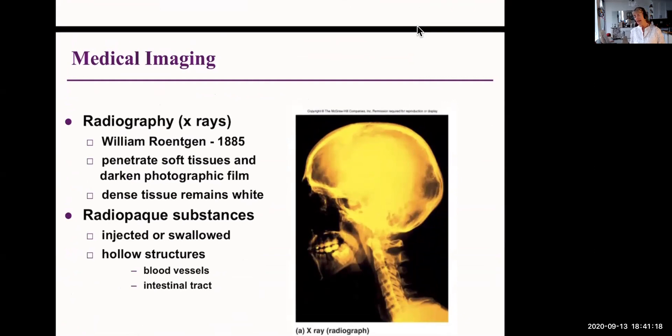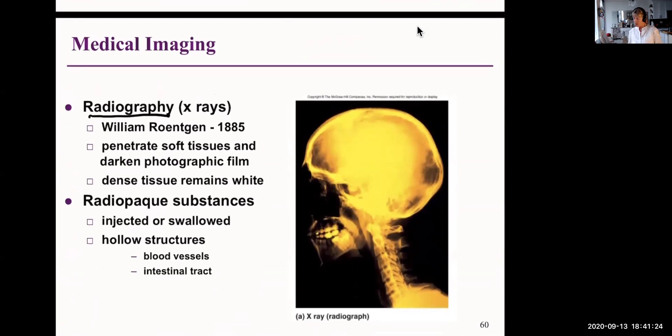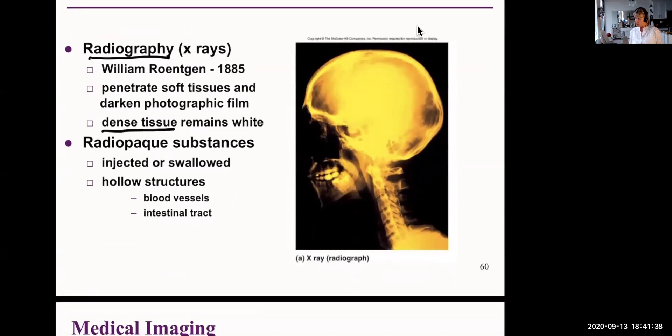So some imaging techniques are, for example, radiography or x-rays. They penetrate soft tissue and they darken a photographic film. So they detect dense tissue because the electrons do not penetrate the dense tissue. Occasionally, radiopaque substances are injected or swallowed and those can be detected by an x-ray.